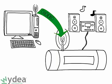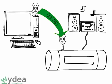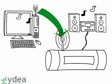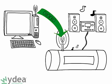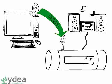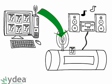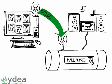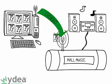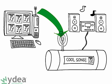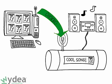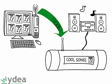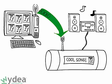Media extenders rely on music streaming, sending the music to which you'd like to listen over the network as the player requests it. The media extender doesn't have to store any music because it simply asks your computer for each song as it's playing. Fortunately, streaming music doesn't take that fast of a network. Even older wireless networks can easily handle music streaming.